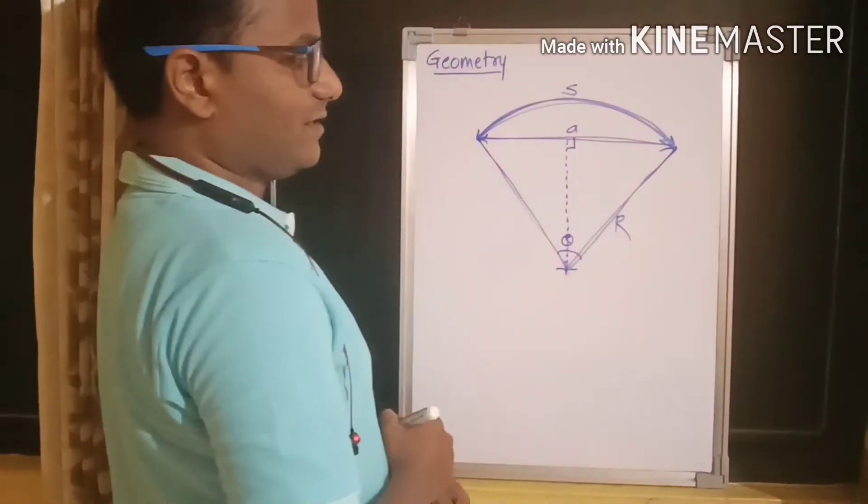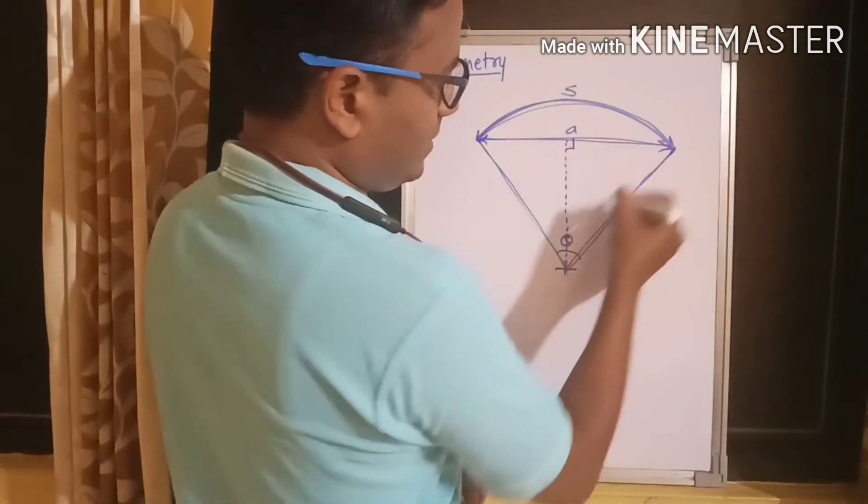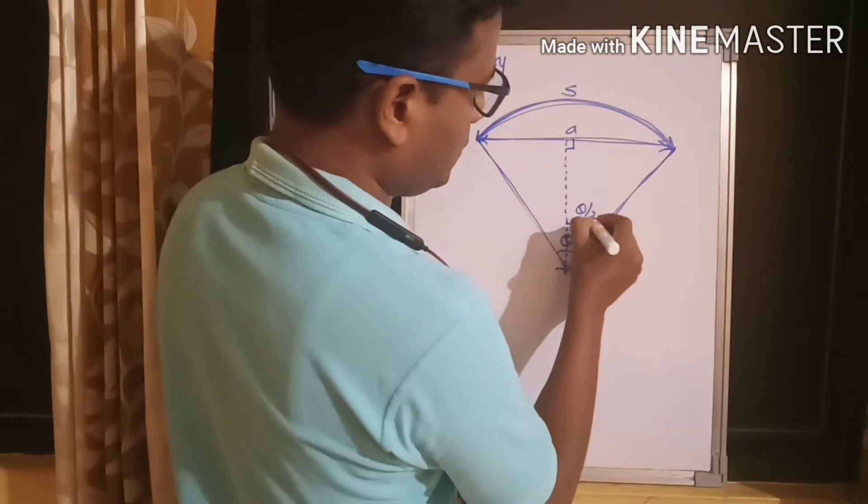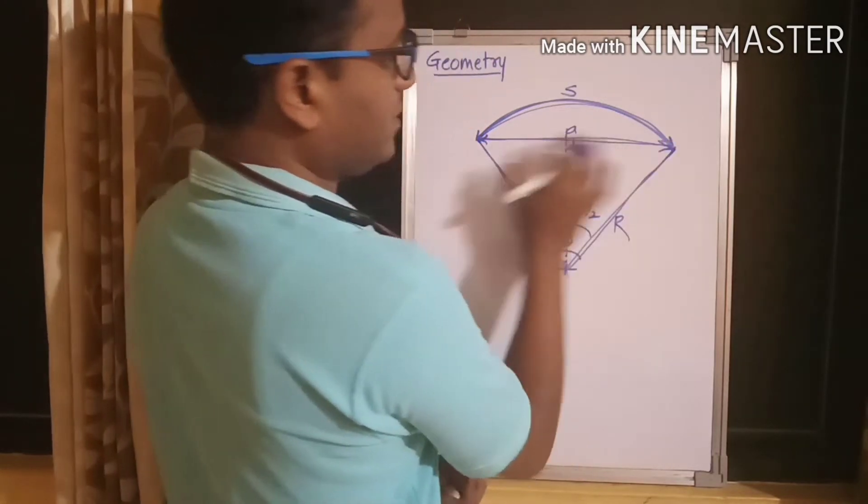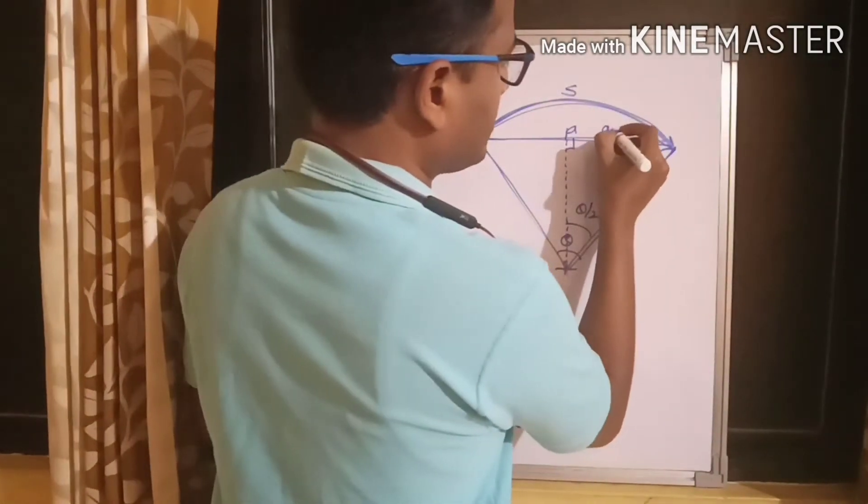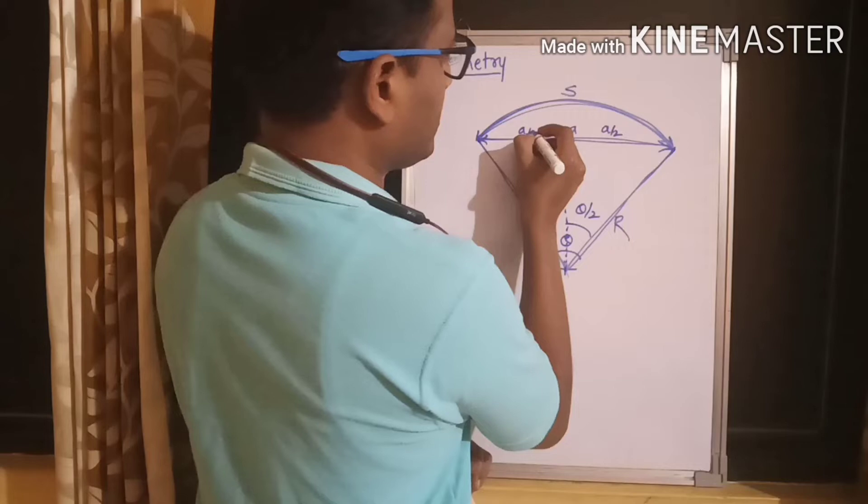Now, this angle is a right-angled triangle. Now, you can see this is a right-angled triangle. This angle is theta by 2. This distance obviously bisects the chord. So, this distance is a by 2. This distance is a by 2.